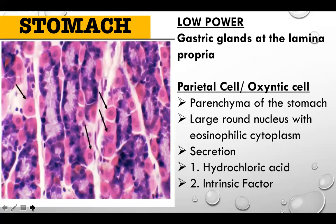The first cell type is the parietal cell, also known as the oxyntic cell. They are the parenchyma of the stomach. They have a large round nucleus with eosinophilic cytoplasm, and their secretions are hydrochloric acid and intrinsic factor. At the practical exam, when you see a large cell with a large nucleus and eosinophilic cytoplasm, that is the parietal cell.